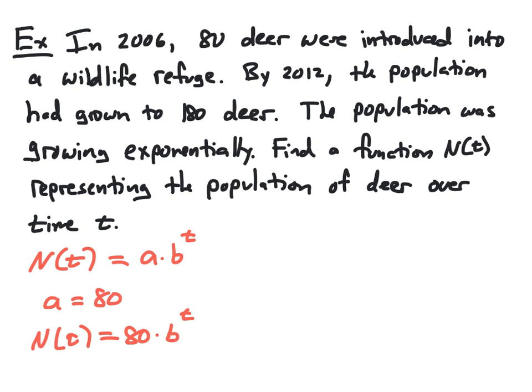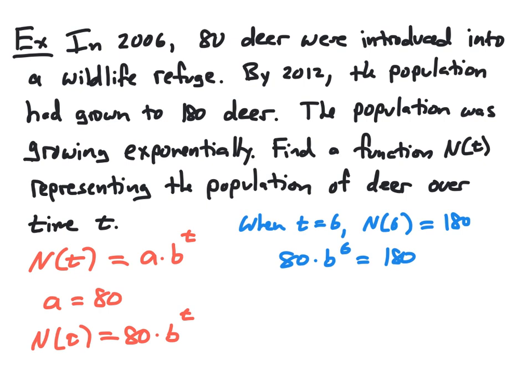All we need to do now is find the value of b. To find b, we use the other given fact: in 2012, which is when t equals 6 (because 2012 is 6 years after 2006), we know that n(6) = 180. Substituting into our formula, we get 80 times b to the 6th power equals 180.